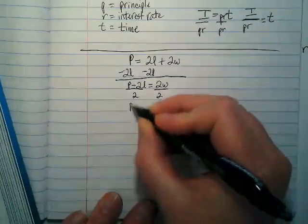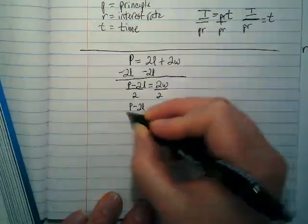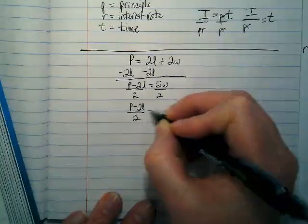We're going to rewrite this as perimeter minus 2L divided by 2 is equal to width.